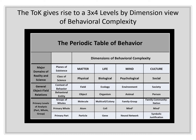This can be seen more clearly when we consider the TOK's view of behavioral complexity. Most models map complexity on a single axis. However, with its view of the different dimensions of complexity, the TOK gives rise to a view with two axes that differentiates the dimensions from the levels of analysis that take place within the dimensions. The periodic table of behavior makes this clear. Here are the dimensions at the level of the columns, and these divisions separate out into the general categories of the object-field relations. There are also the primary levels of part, whole, and group.